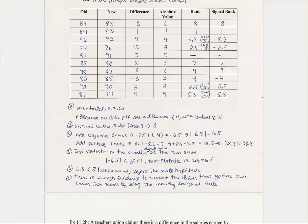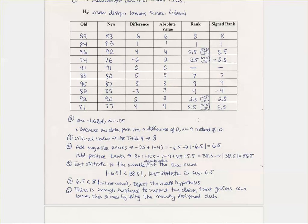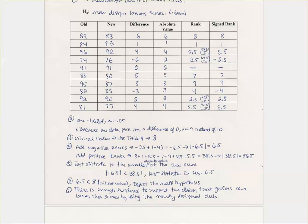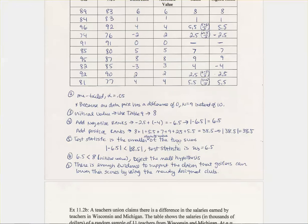So when you get down here, this is one tailed. It's because one data pair has a difference of 0. Your number is actually 9 instead of 10. So basically what that means is that because you've got that 0 right there, you kind of like just X out of that one. You basically just ignore that entire row right there. So that's why you have 9 instead of 10. You would look up your critical value on table 9. And that would give you an 8 using your degrees of freedom and your n of 9.